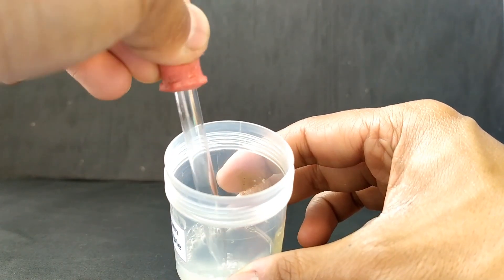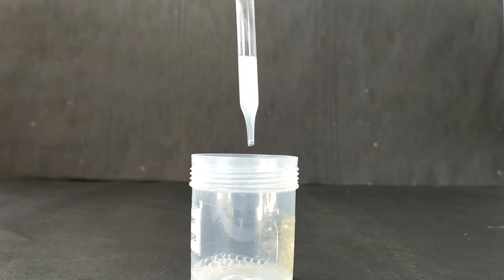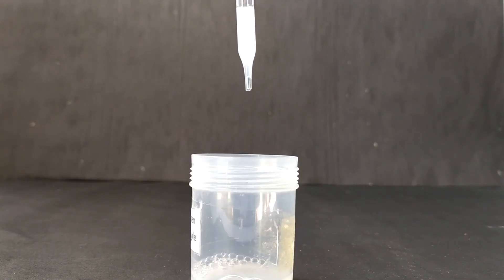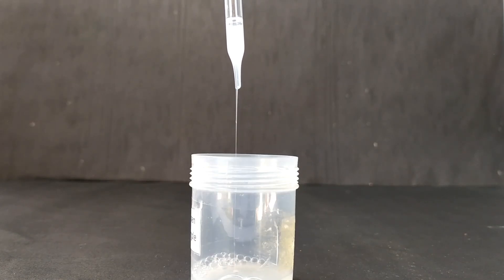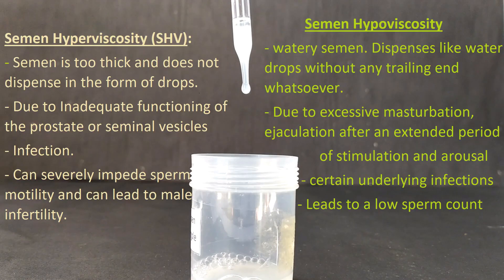The viscosity of semen is determined on a sample that has already been through liquefaction. When normal semen is drawn in a narrow tube or dropper and allowed to dispense by the force of gravity, it flows out in the form of medium-sized discrete drops without any trailing strands. Abnormally viscous semen, however, flows out in the form of long and thick viscous strands that are more than 2 cm. This condition is called semen hyperviscosity or SHV, and is an indication of inadequate functioning of the prostate or seminal vesicles and also infection. Hyperviscous semen can severely impede sperm motility and can lead to male infertility.